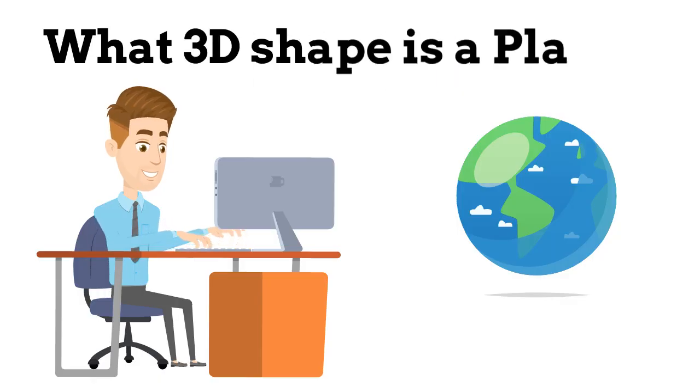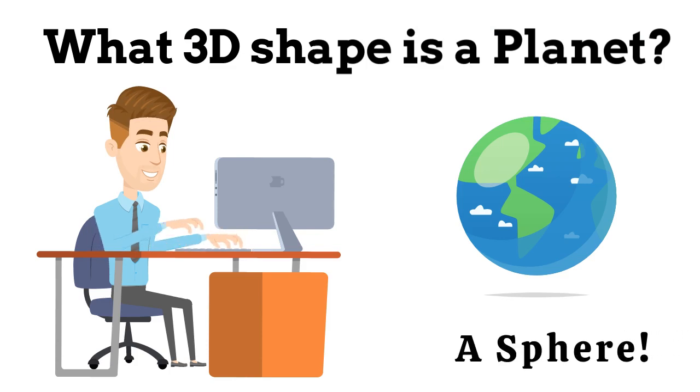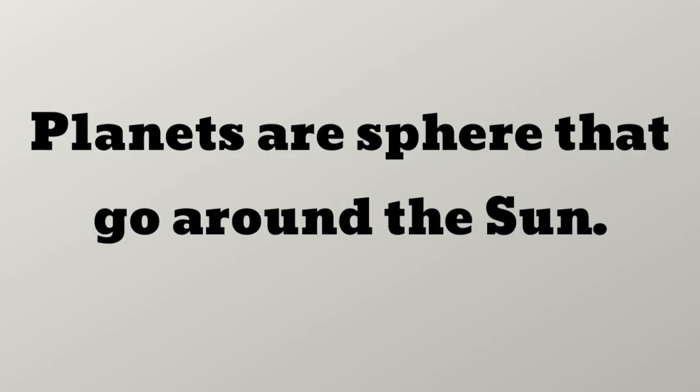What 3D shape is planet? Think about it. Yes, planets are in round shape. But what 3D shape is this? Yes, it's sphere. Planets are sphere in shape. So planets are sphere that go around the sun.